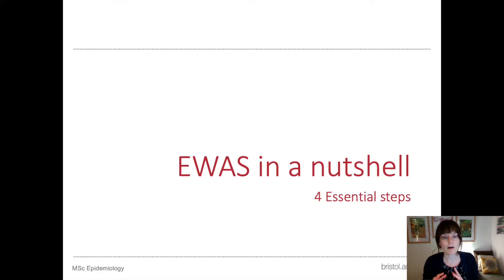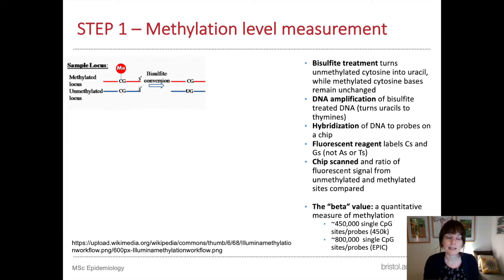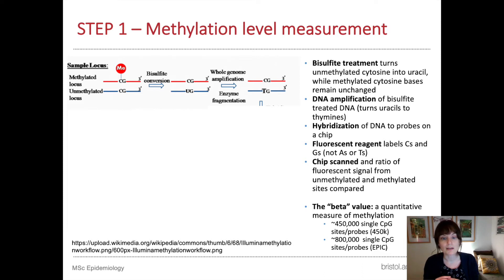There are four key steps to performing an EWAS. Step one: the Infinium Methylation Assay, or the Illumina array, is an assay by the biotech company Illumina. It detects cytosine methylation based on genotyping of bisulfite-converted genomic DNA. The first step is to treat the DNA with bisulfite, which means unmethylated cytosine bases are converted to uracil, while methylated cytosine bases remain unchanged.